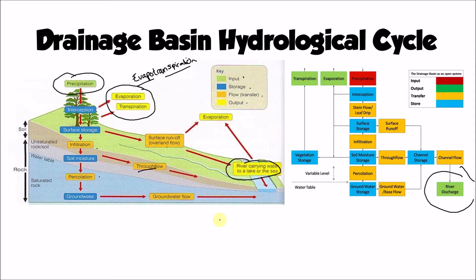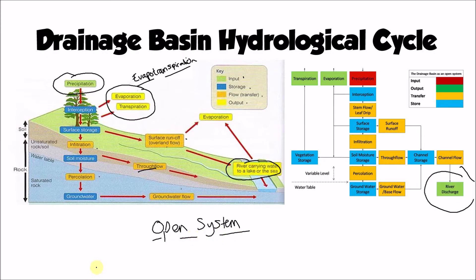We can think about this hydrological cycle as a journey with stops along the way — those stops are the stores, and the movements between those stops are the flows and transfers, things like surface runoff or groundwater flow that move water from one store to the next. The important thing to remember is that the drainage basin hydrological cycle is an open system, so water and energy can come into and out of that system. We have inputs of precipitation and outputs of evapotranspiration and river discharge.